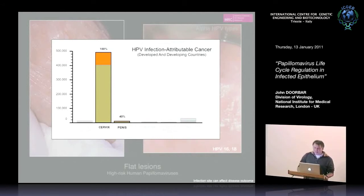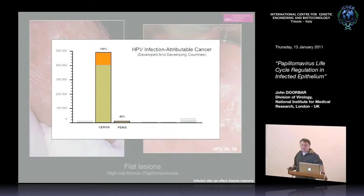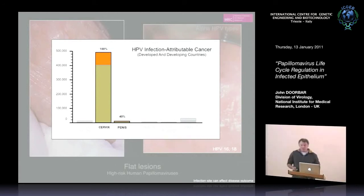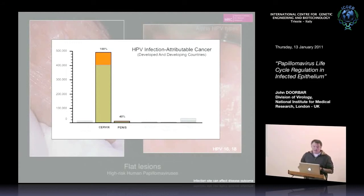You can get an indication of the site's importance by considering the number of cancers attributed to high-risk papillomavirus infections at different sites. At the cervix, there are about half a million cases of cervical cancer a year worldwide, and close to 100% are associated with HPV infection and HPV gene deregulation. If you consider penile sites — because these are sexually transmitted viruses found in men just as frequently — the incidence of penile cancer is very low, about 40,000 cases a year, and only half of those are associated with papillomavirus. So the site of infection is very important.